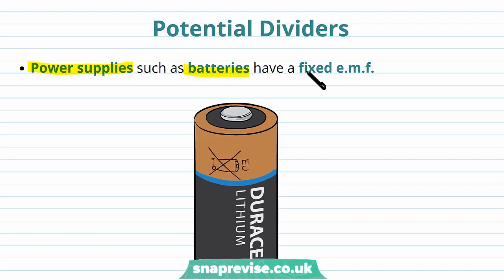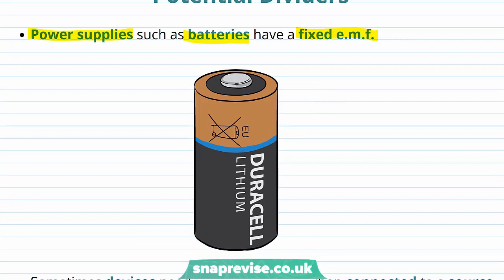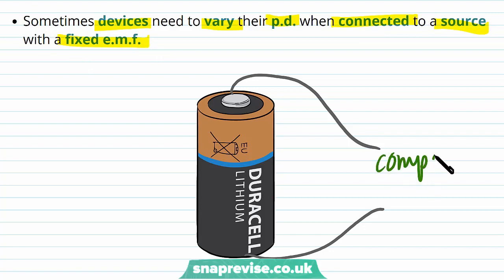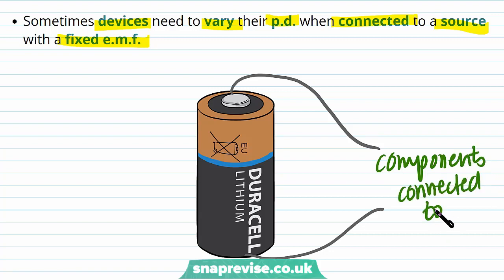Power supplies such as batteries have a fixed EMF. We have a battery here which is quite often the power supply for a circuit, and this battery has a fixed EMF that we can't change. Sometimes devices need to vary their potential difference when connected to a source with a fixed EMF. So if we want a different EMF than the one supplied by the battery, we have a problem.